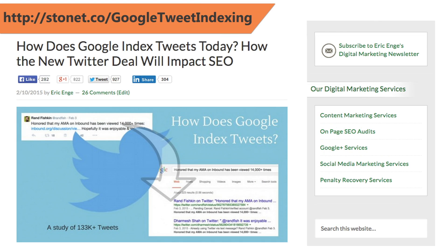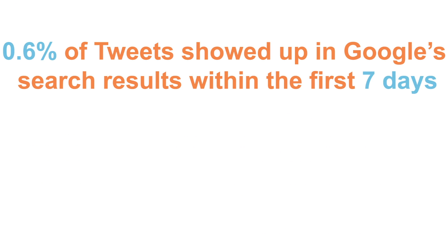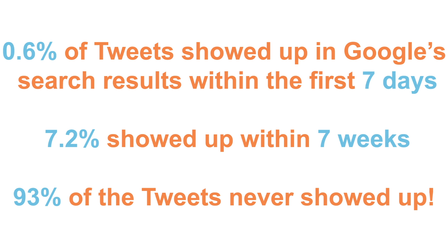At that time, we pulled data on over 133,000 tweets, then looked to see which of those tweets were indexed by Google. We found that only just over 0.6% of tweets showed up in Google's search results within the first seven days and 7.2% within seven weeks. That means almost 93% of the tweets in our test never showed up in search.